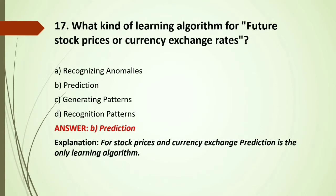MCQ: What kind of learning algorithm is needed for future stock prices or currency exchange rates? Options: A) Recognizing anomalies; B) Prediction; C) Generating patterns; D) Recognition patterns. We do not need recognizing anomalies, generating patterns, or recognition patterns for stock markets. We can predict future stock prices, so the only algorithm needed here is prediction. Answer: Prediction.